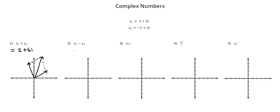Problem two: Z1 minus Z2. We can perform the subtraction to arrive at 4 minus 2i. Again, we're going to show the complex numbers in the Argand diagram, starting with Z1, 3 plus 2i. I'll also use a position vector to represent Z1. Since Z2 is being subtracted, I'm going to take the opposite of Z2, which is positive 1 minus 4i, and plot that point and create a position vector.